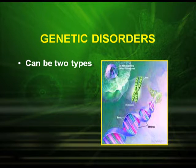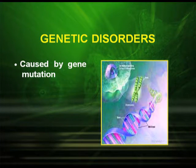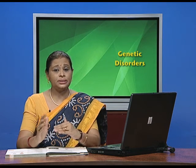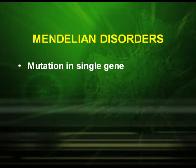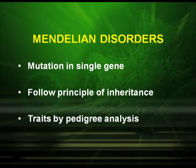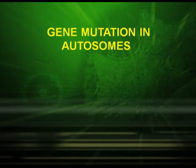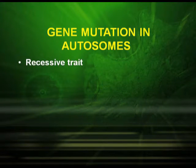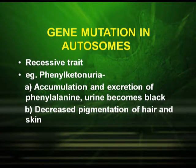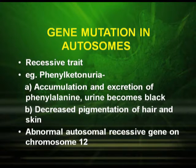Now let us discuss genetic disorders in humans. Genetic disorders are divided into two types: Mendelian disorders and chromosomal disorders. In general, genetic disorders are caused by gene mutation. In Mendelian disorders, the mutation is in a single gene; these follow principles of inheritance and the traits can be analyzed by pedigree analysis. Let us first consider gene mutation in autosomes — they are basically recessive traits, and the example is phenylketonuria, where there is accumulation and excretion of phenylalanine. The urine becomes black, there is decreased pigmentation of hair and skin, and it involves an abnormal autosomal recessive gene on chromosome number 12.